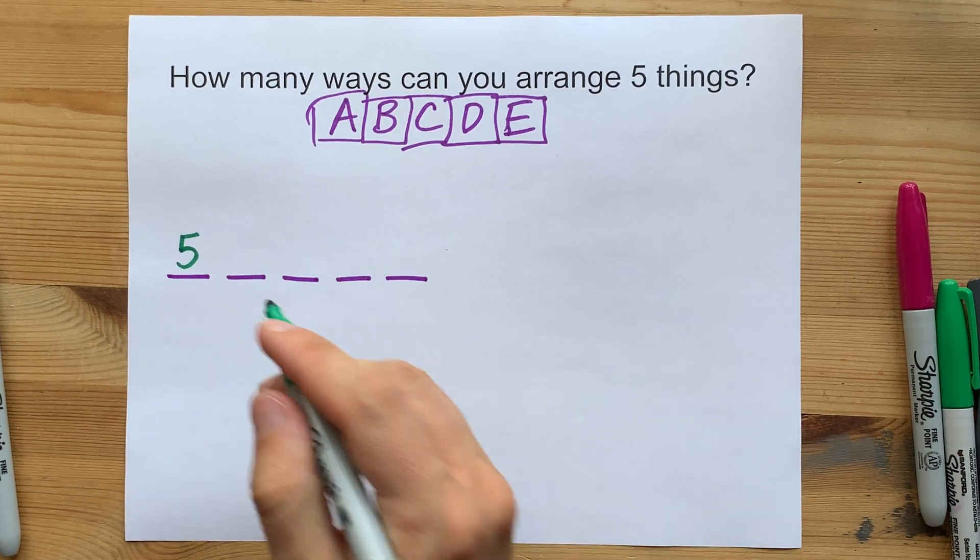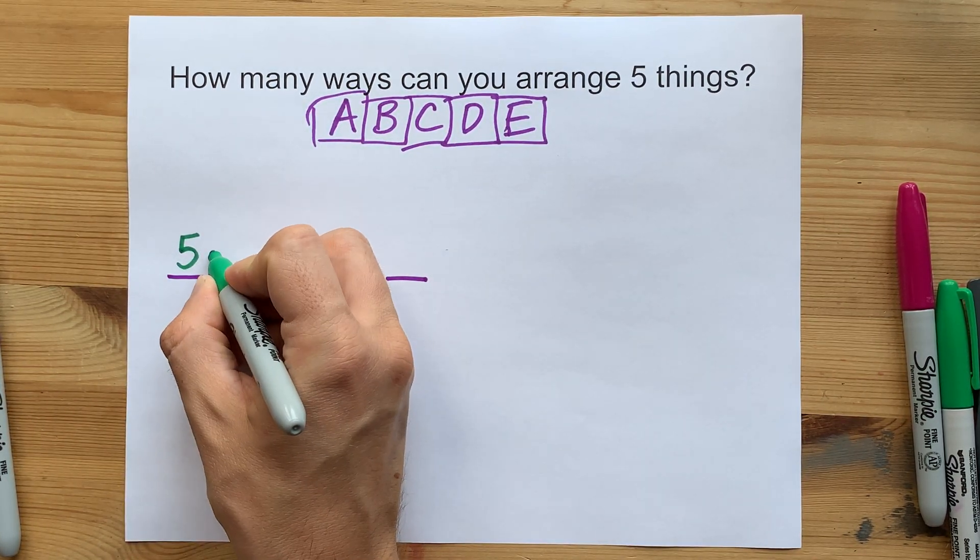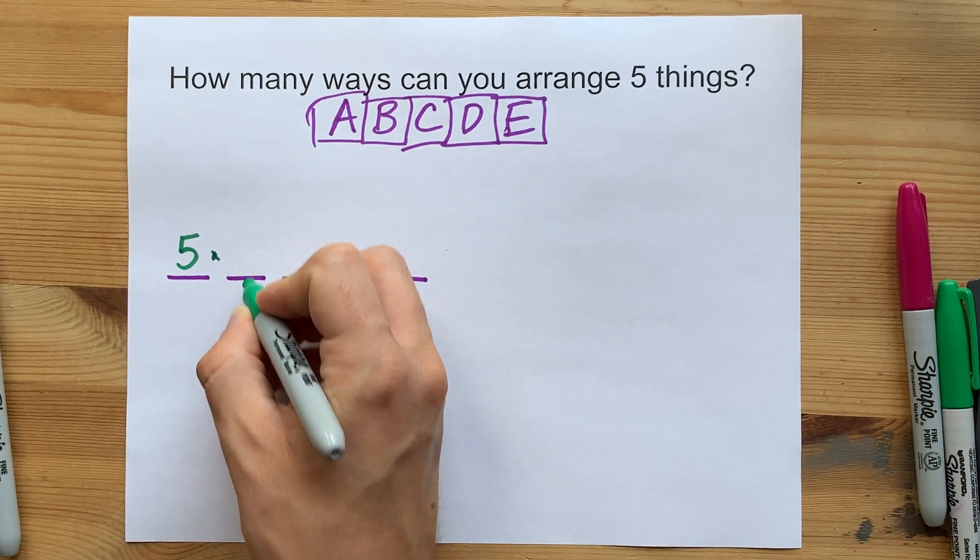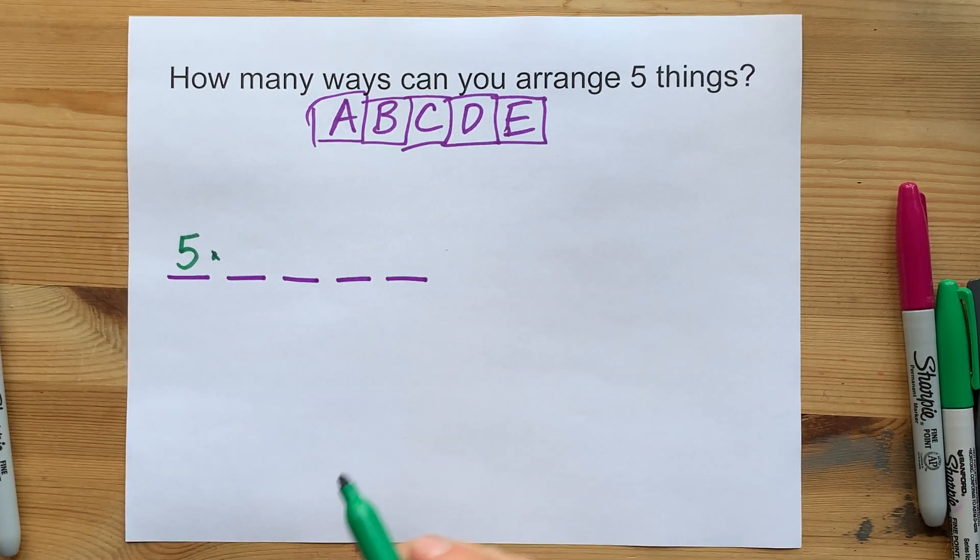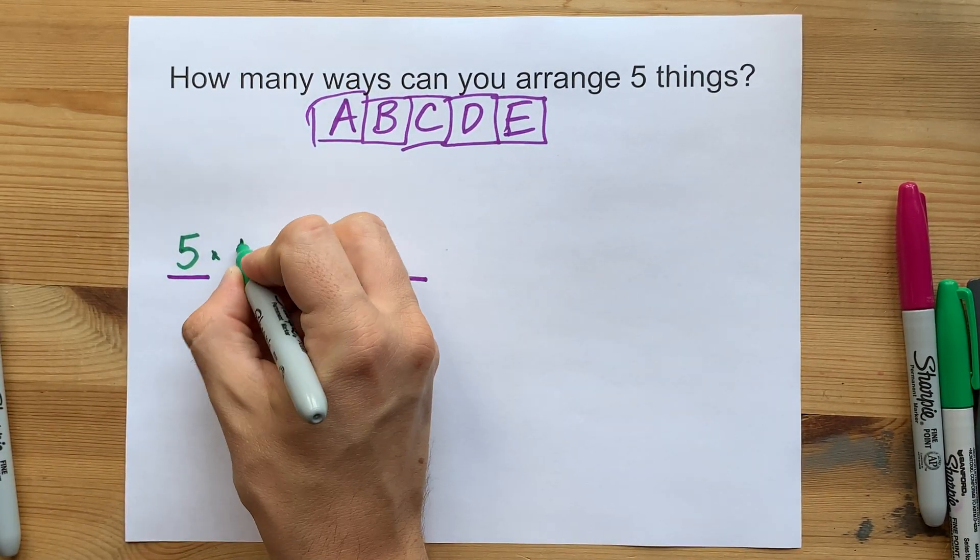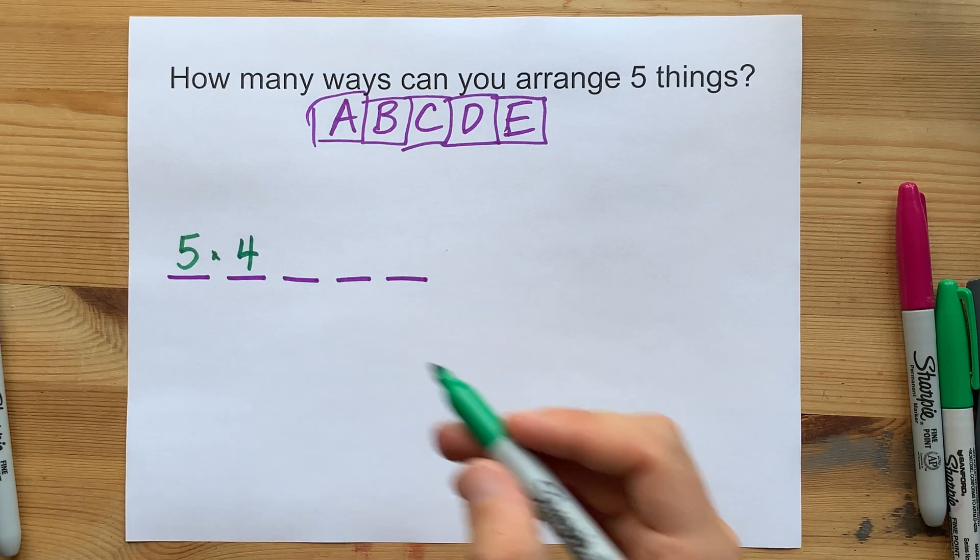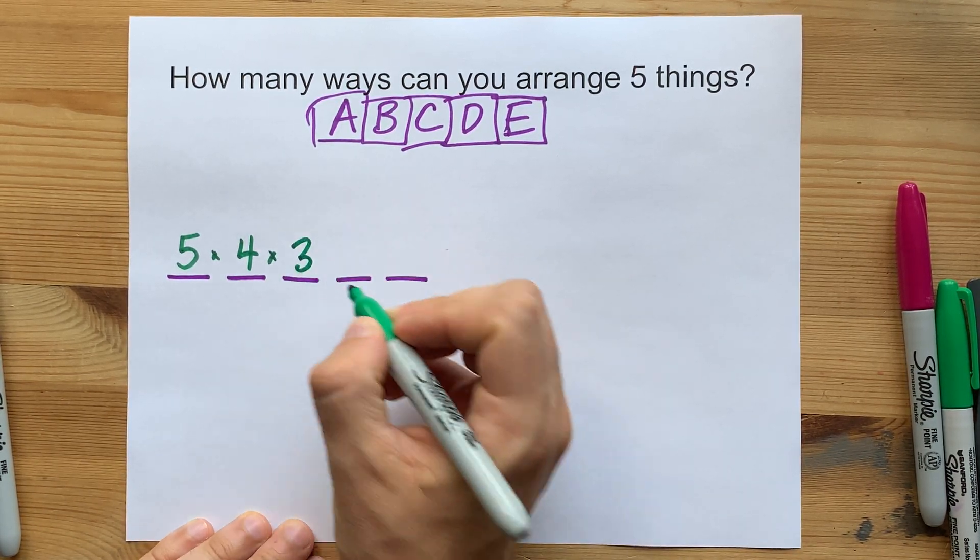But at that point, you've now used up one of your tiles. So, by the time you're choosing a next thing to put in the next slot, how many options do you have? You're down to four because you've already used one up. And then by the time you get to the next slot, you have only three letters to choose from.